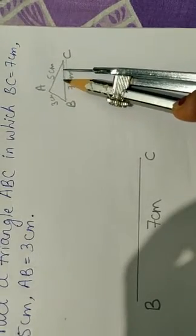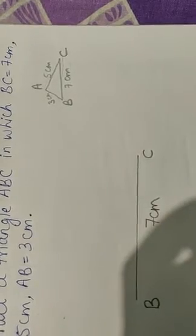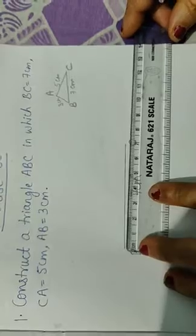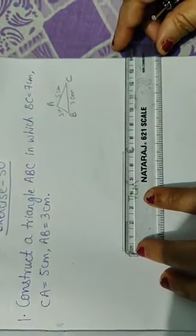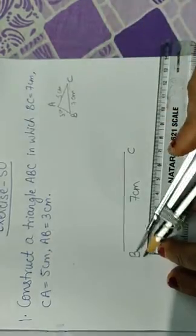Now using this rough diagram we will draw the fair one. So you will first take your ruler and with the help of ruler you will make a line segment of 7 centimeter, that is BC. It is given in your question. So name it as BC.